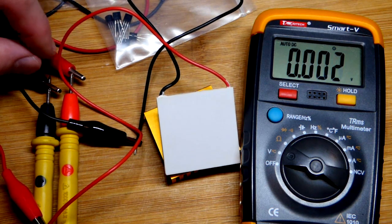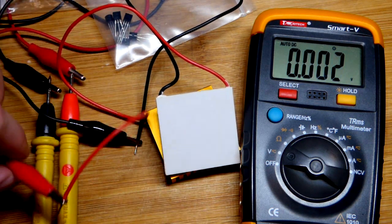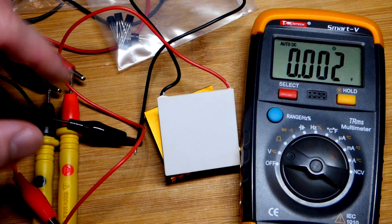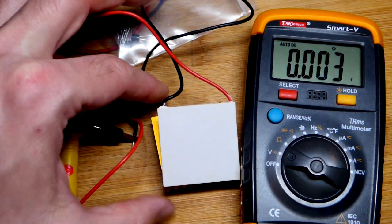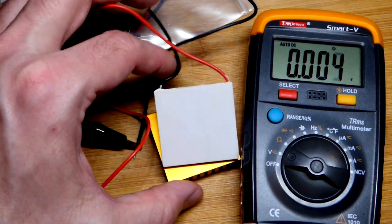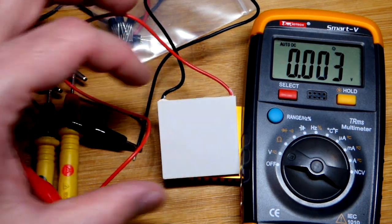You can see I got alligator clips to the probes of the meter there, and then the other side comes to the wires that go there. The heat sink I'm just going to use to help keep the two sides of the plate a different temperature.